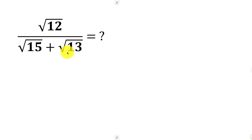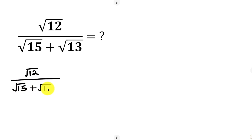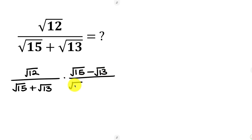So our first step will be for us to multiply by the conjugate. So how do we multiply by the conjugate? Well we have the square root of 12 all over the square root of 15 plus the square root of 13. So multiplying by the conjugate means multiplying by the square root of 15 minus the square root of 13, all over the square root of 15 minus the square root of 13. So this is what we mean by saying multiply by the conjugate.